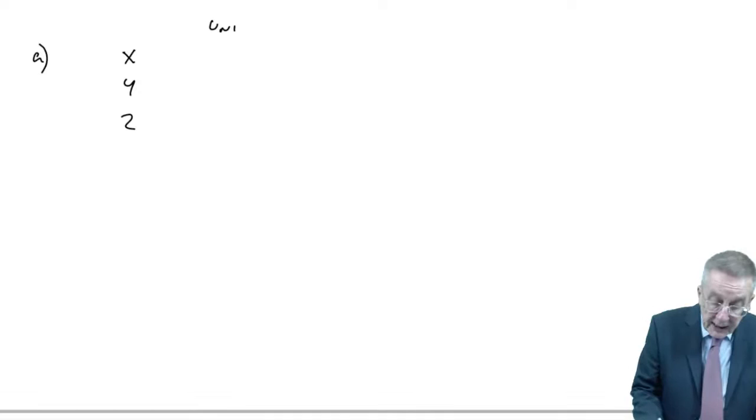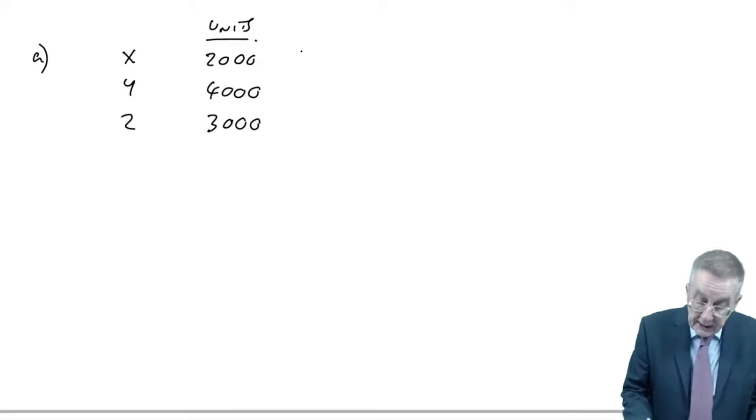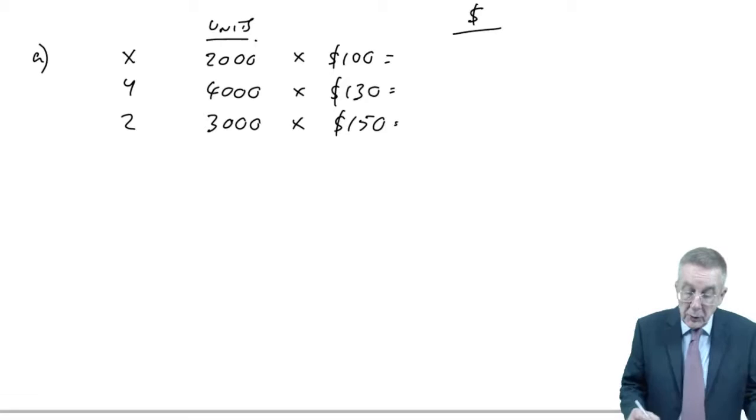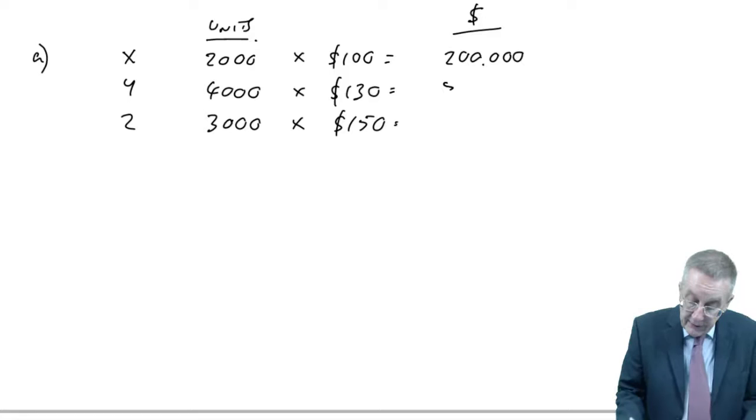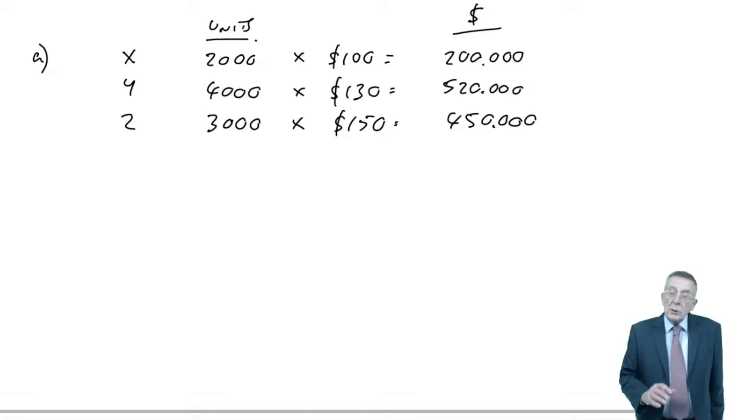So, you can do both at once though. We're budgeting on selling X, Y and Z. In terms of units, it's 2000 X, 4000 Y and 3000 Z. So, there is our sales budget in units. Now, what about revenue? Well, we know the selling price is $100, $130, $150.